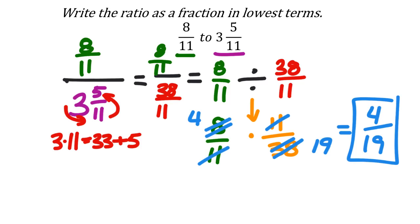For a quick check I'll use the calculator. Push the fraction button twice so the fraction is in the numerator. Enter 8, push down, enter 11. Then in the denominator, push second and the fraction button to enter the mixed number: 3, over, 5, down, 11. Push Enter and it fully simplifies, confirming our answer is 4 over 19. The calculator is a great way to check our work.